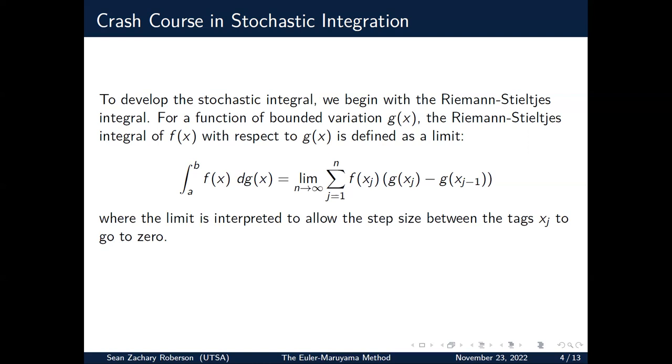where the integral from a to b of f of x dg(x). So now we're integrating with respect to a relatively well-behaved function. We can express that using usual Riemann sums, except now we have jumps in the integrator, g(x_j) minus g(x_{j-1}). And the limits are in the usual sense where we take the limits as the mesh of that partition, the step size between the tags, goes to zero.